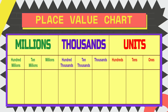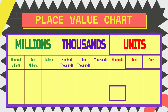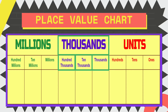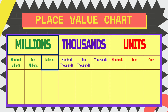Let's have it one by one. Under units, we have ones, tens, and hundreds. Under thousands, we have thousands, ten thousands, and hundred thousands. While in millions, we have millions, ten millions, and hundred millions. We have more place values higher than millions, but we will stick up to millions only.